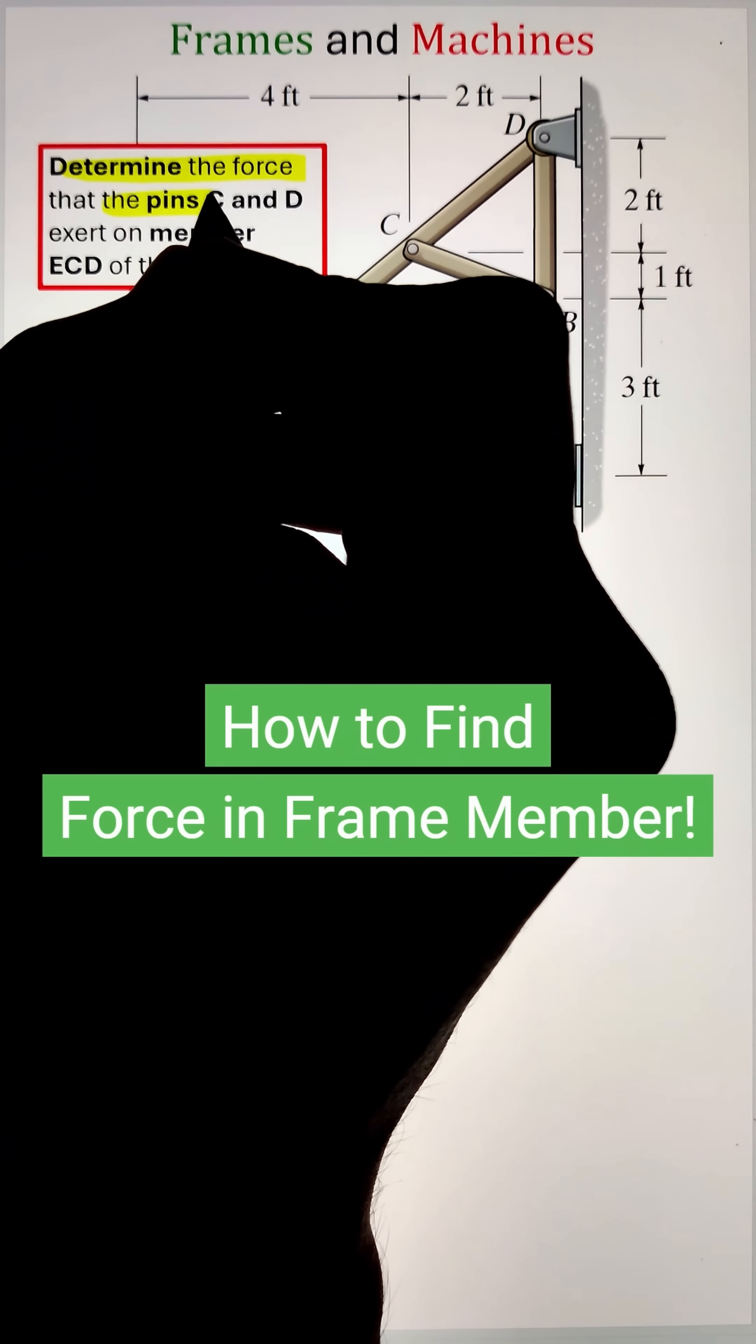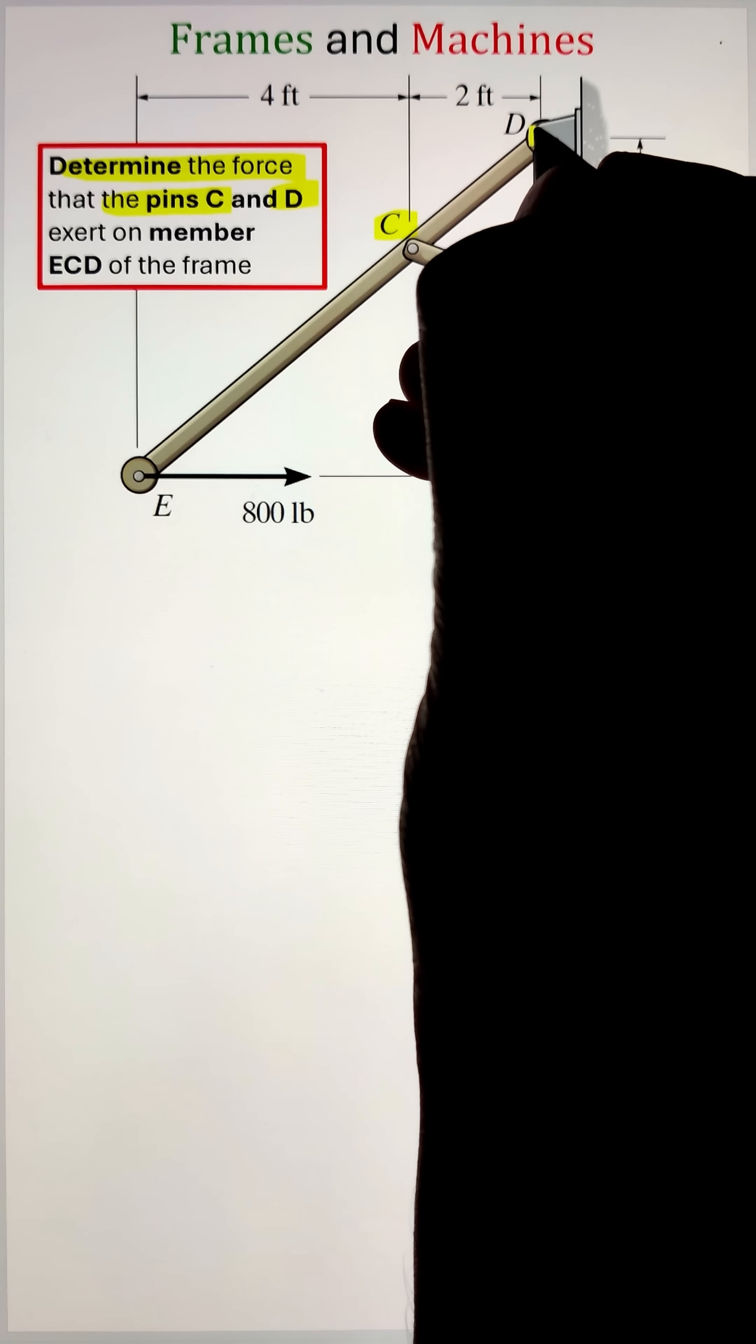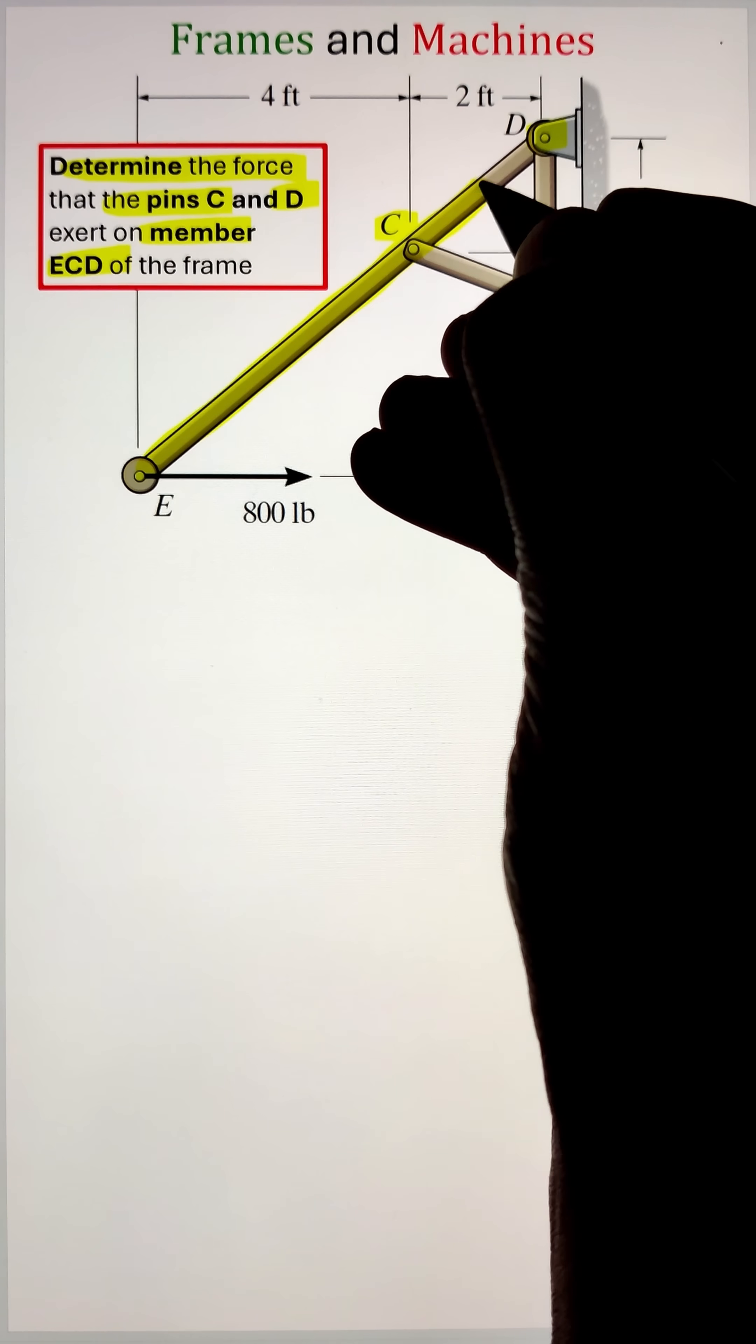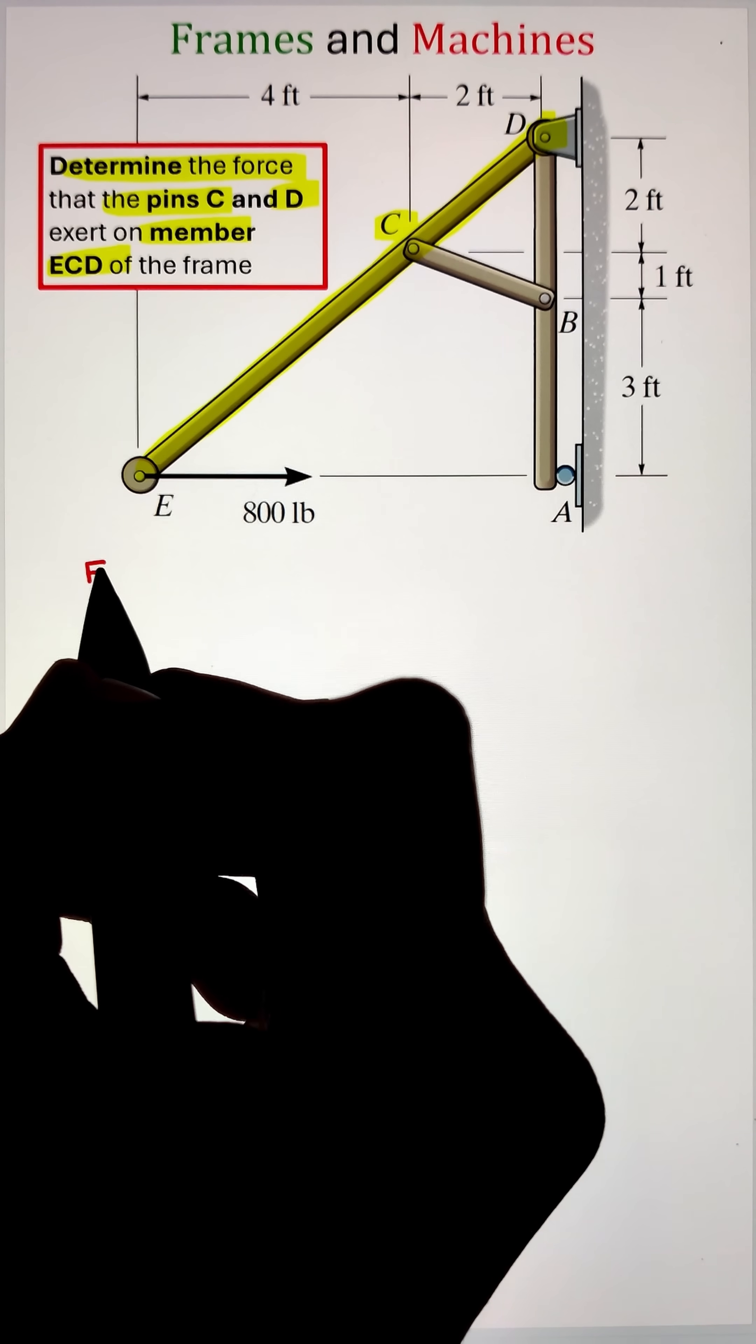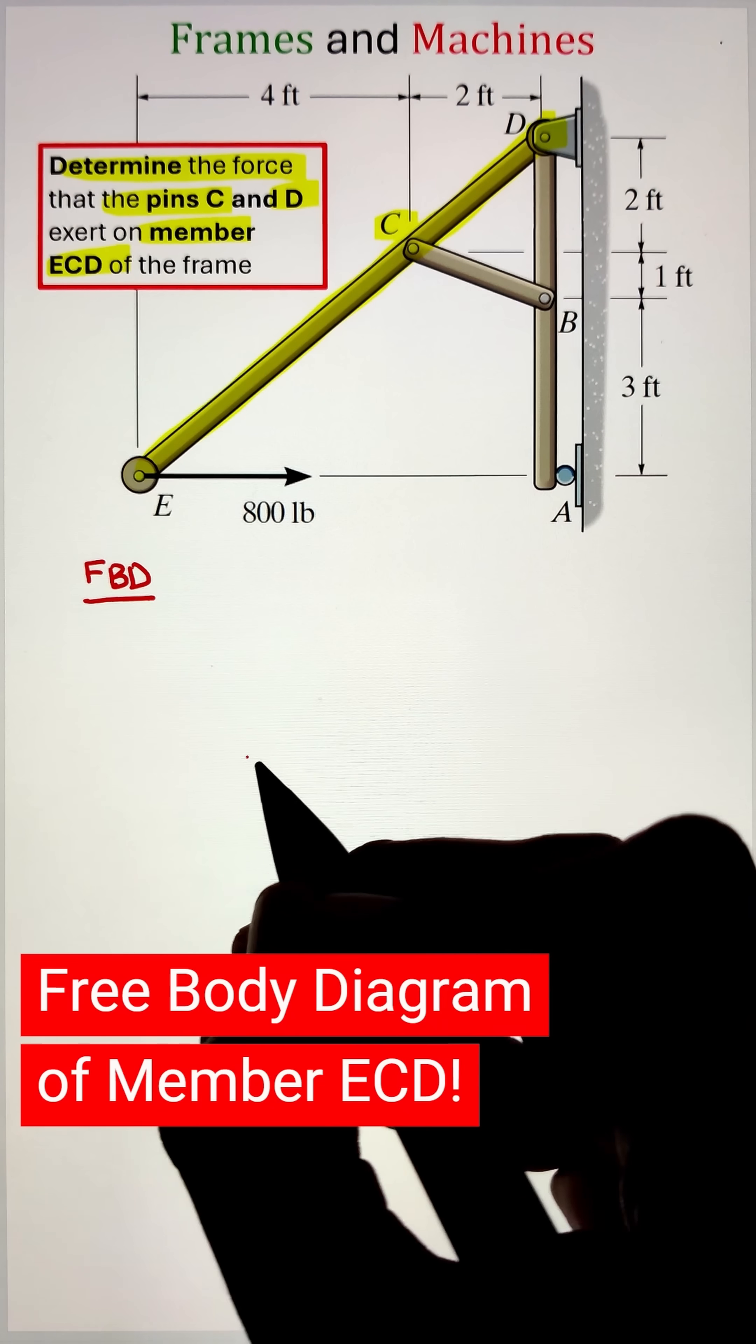In order to determine the force that the pins C and D exert on member ECD of the frame, we can start by developing the free body diagram of the member ECD and listing down all the external loads and the support reactions exerted on the member.